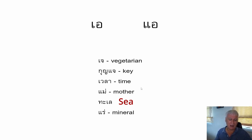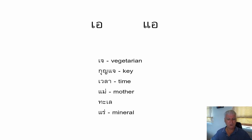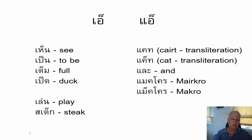This word is very similar to the previous one and has the same falling tone, but the initial consonant is Ro Re — the R consonant. So it's 're' with a falling tone, meaning mineral. If you go to 7-Eleven and see bottles of mineral water, it would say 'nam re.' Sometimes you will see these vowels used in combination with another symbol.